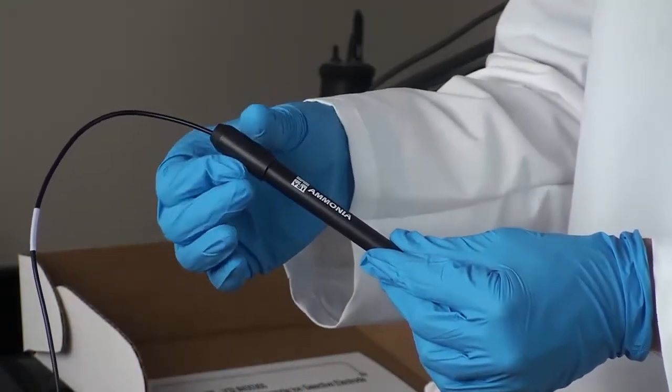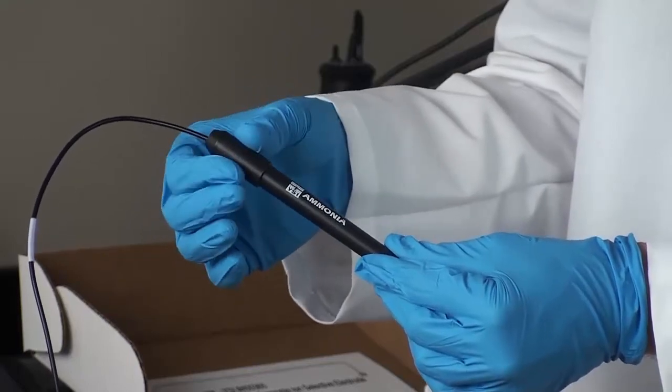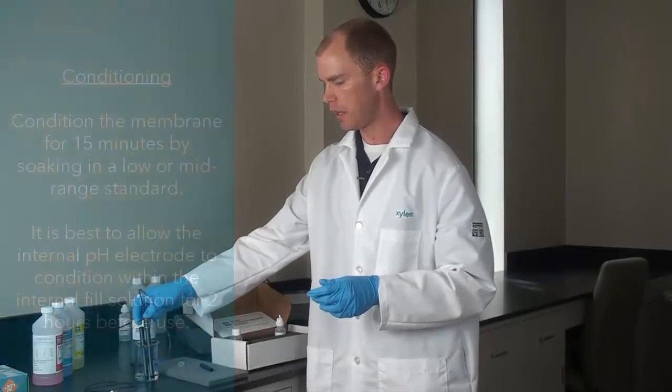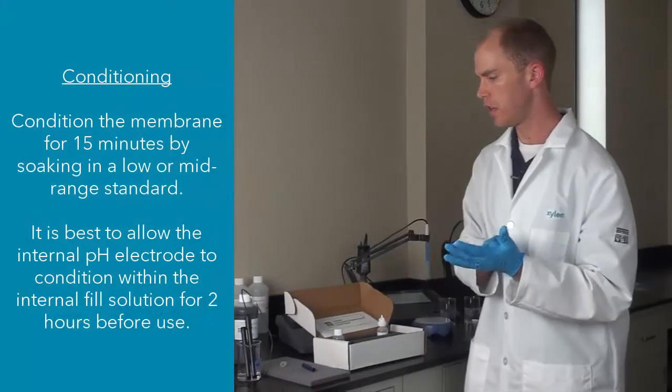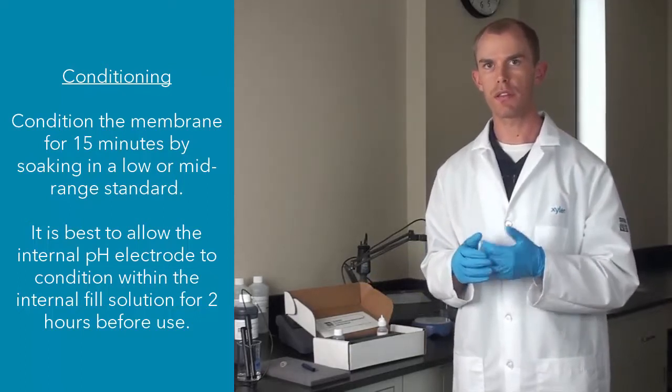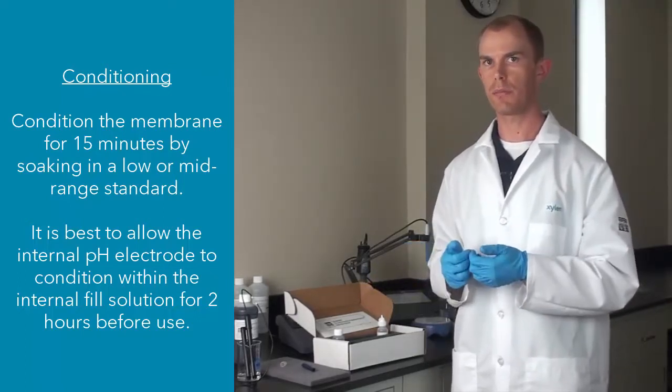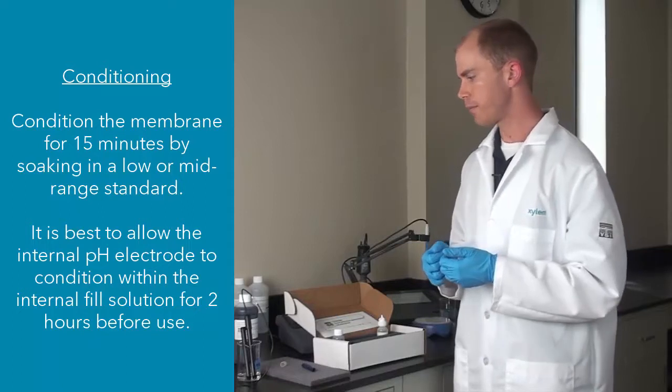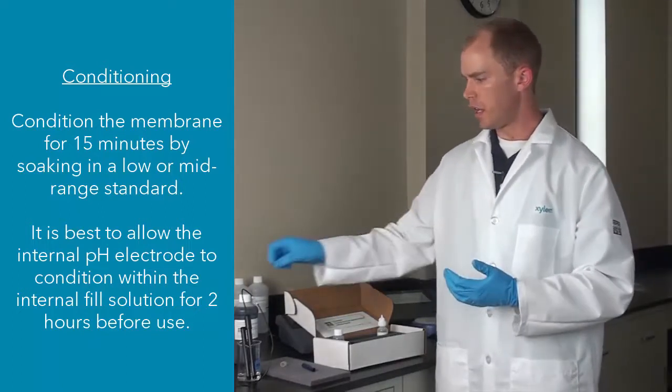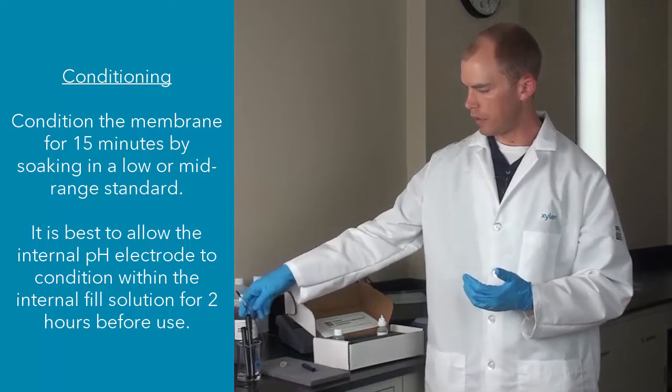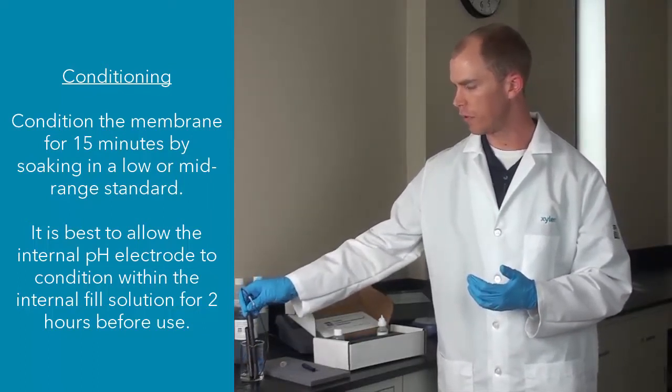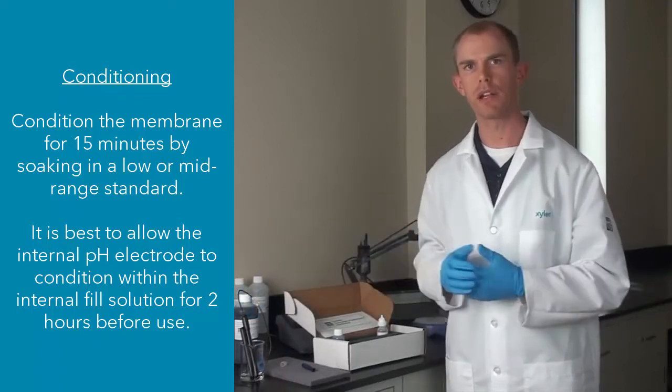Once you've done that, it is ready to be used, but I would recommend conditioning the electrode in a low concentration solution. For example, I'm going to be calibrating with 10 mg per liter and 100 mg per liter standard, which you will be able to see on YouTube. So I've created a solution of 10 mg per liter standard, and I'm going to soak my electrode in it for about 15 minutes.